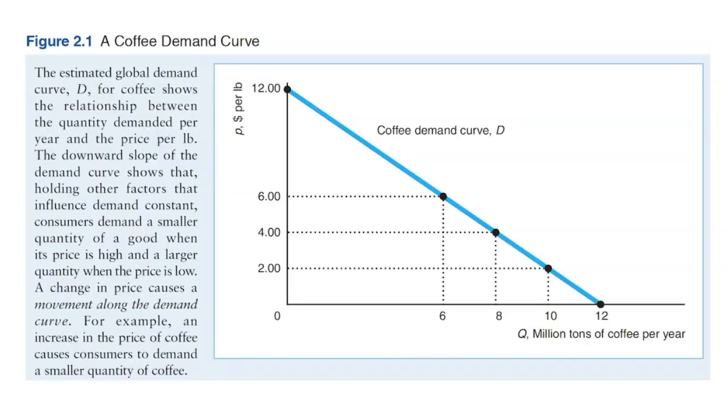A demand curve is a plot of the demand function that shows the quantity demanded at each possible price, holding other factors constant. A change in the price of the good causes a movement along the demand curve.